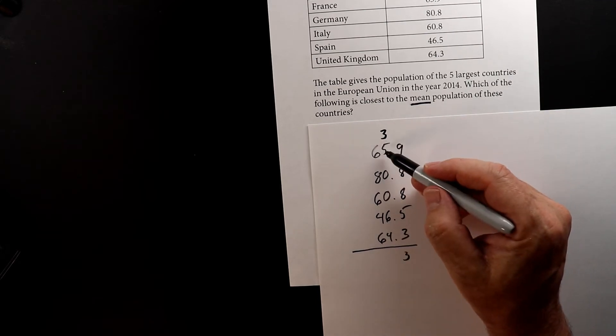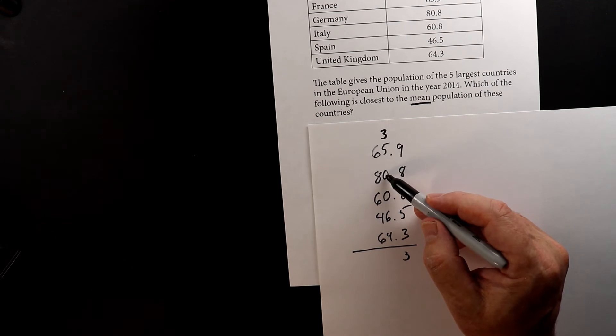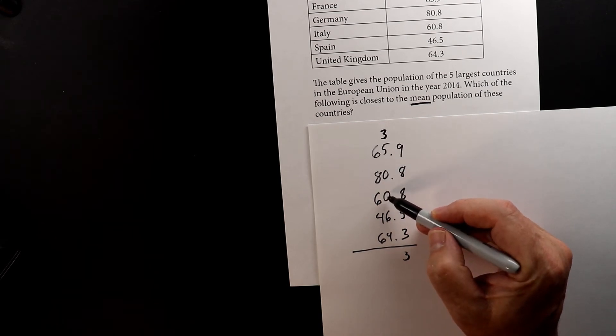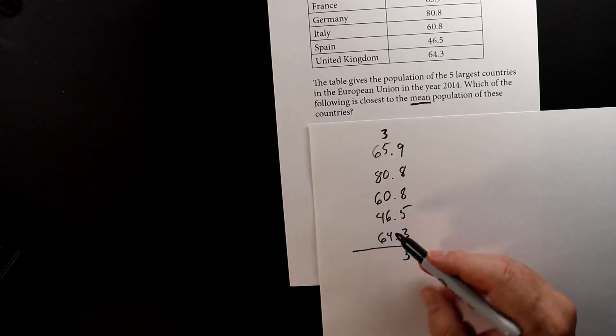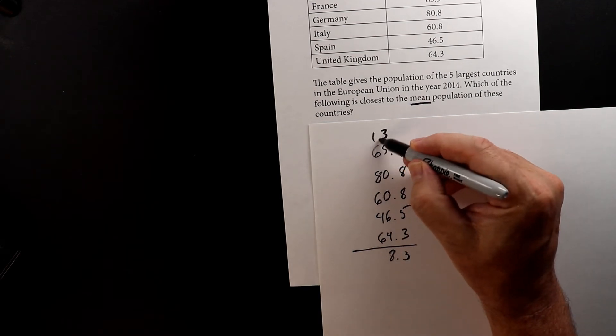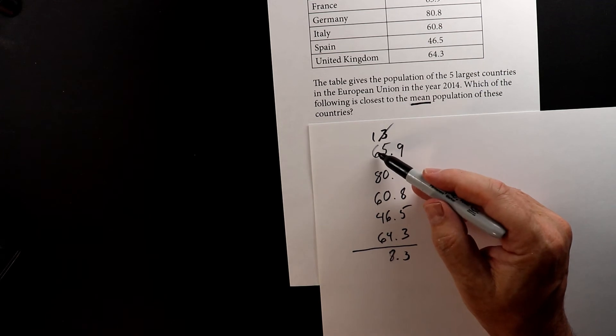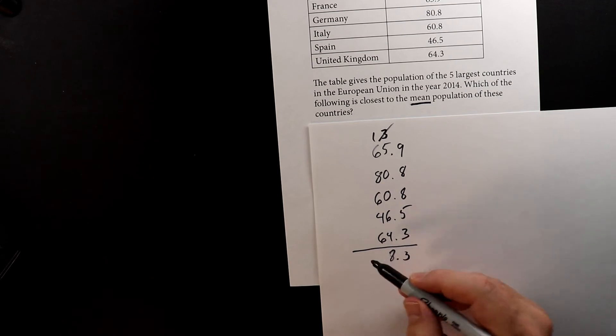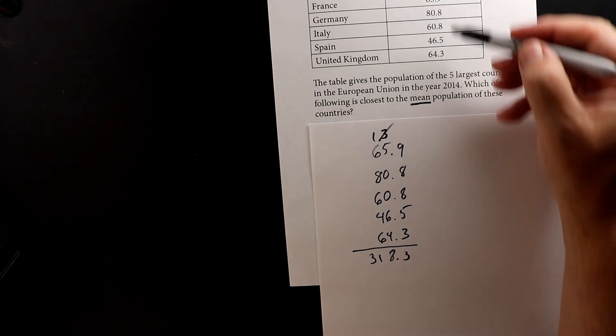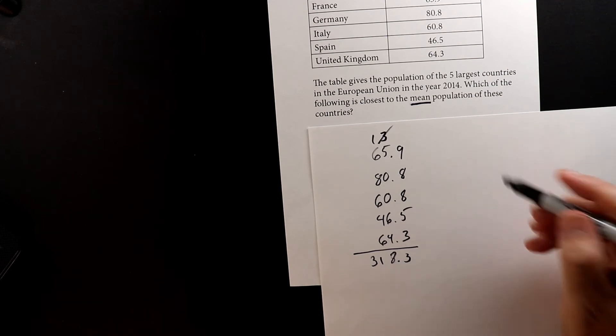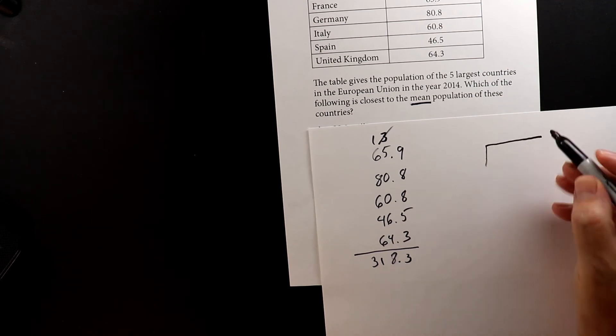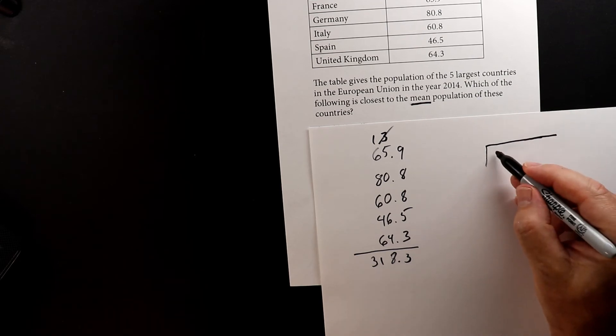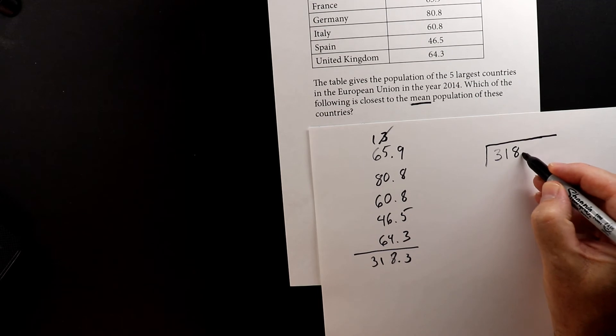So we have 3 plus 5 is 8, 8 plus 0 is 8, 8 plus 0 is 8, 8 plus 6 is 14, 14 plus 4 is 18. And I remember that I need to put a decimal there. So 18, and I carry the 1. 1 plus 6 is 7, 7 plus 8 is 15, 15 plus 6 is 21, 21 plus 4 is 25, 25 plus 6 is 31. So the total of all these numbers is 318.3.